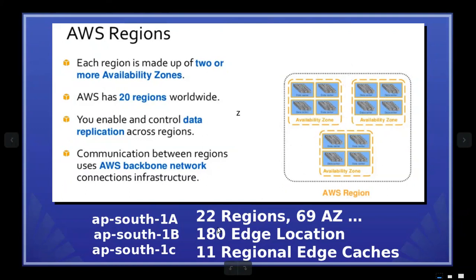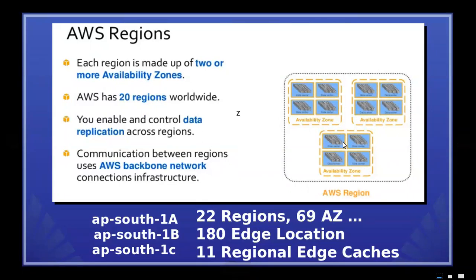There are multiple availability zones within a region. In India, there are three availability zones. If you want three available locations, you can compare those three availability zones.